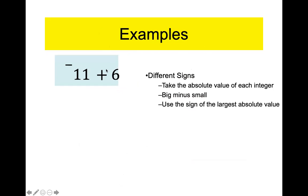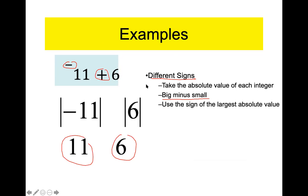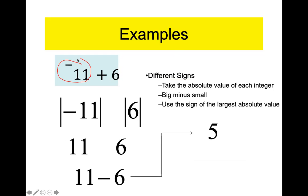Negative eleven plus six — one sign is negative, one is positive, so different signs. Strip the signs: eleven and six. Big minus small: eleven minus six is five. Go back to original numbers: negative eleven and positive six — more negatives. Answer is negative five. You've got to stop me if you're confused.